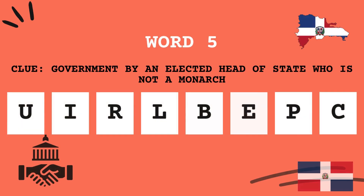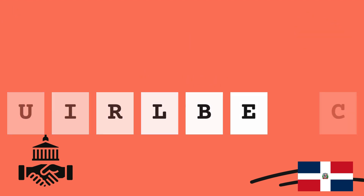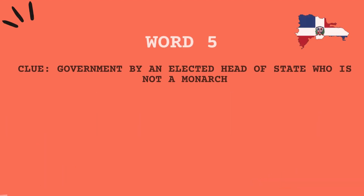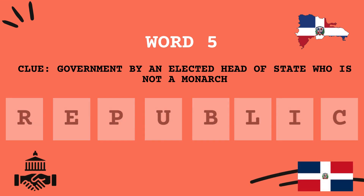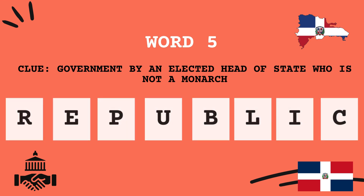This is a government by an elected head of state who is not a monarch. You are going through these words very quickly — you are a student, man.